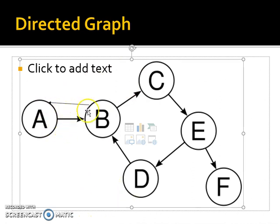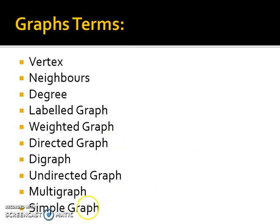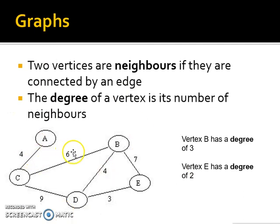That becomes a multigraph because you've got edges going in both directions. Simple graph would be like this with no weights on there.